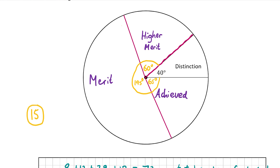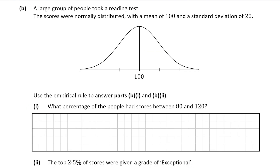Now let's have a look at Part B. Part B tells us that a large number of people took a reading test; the scores were normally distributed with a mean of 100 and a standard deviation of 20. We're asked to use the empirical rule to answer parts B1 and B2. Part B1 wants us to work out the percentage of people that had scores between 80 and 120.